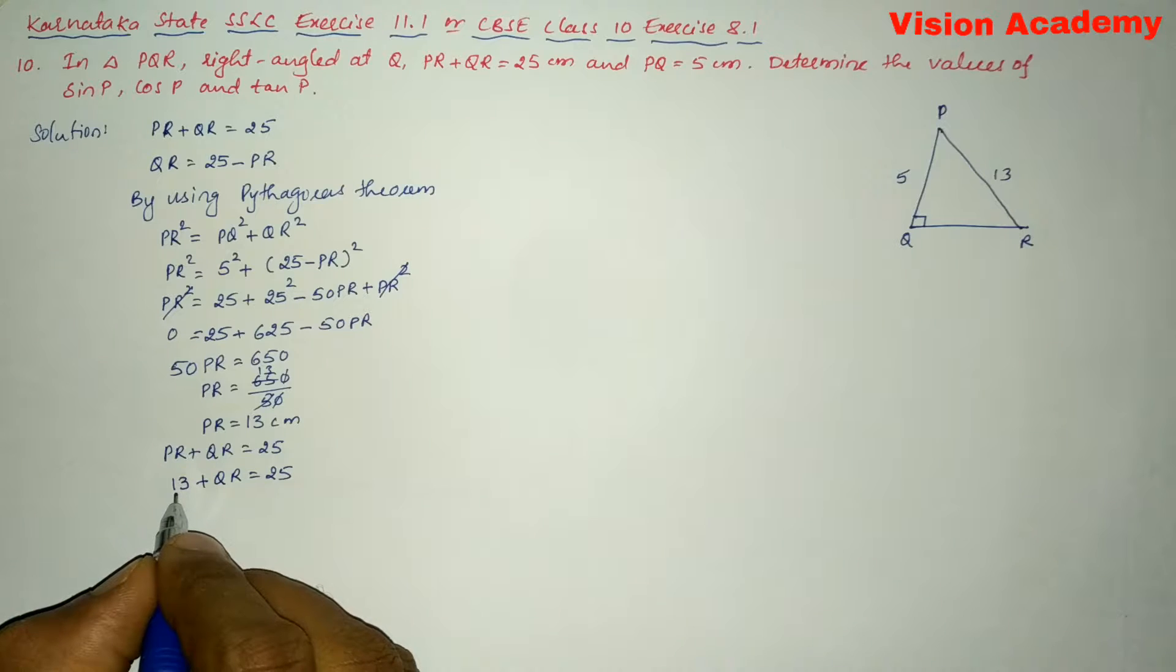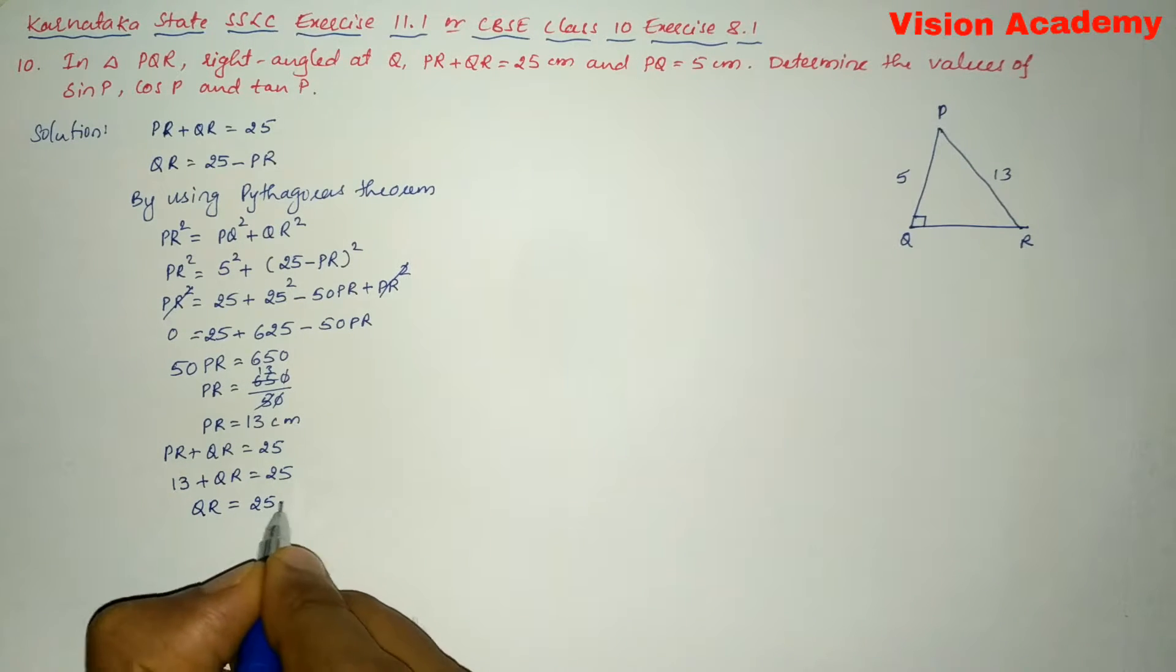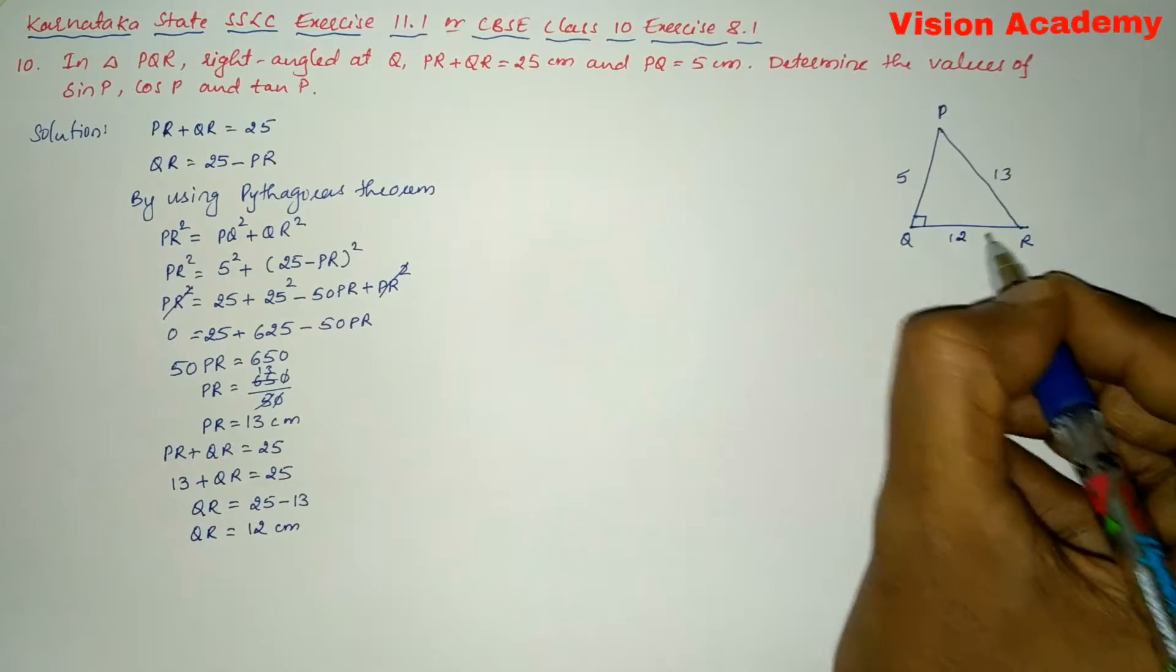We will get QR is equal to 25 minus 13. So here QR is equal to 25 minus 13 gives us 12 centimeter, so here this is 12 centimeter.